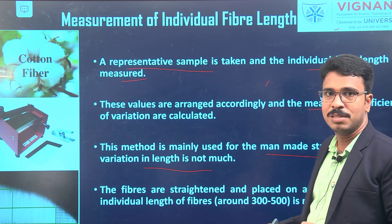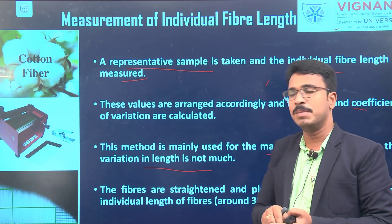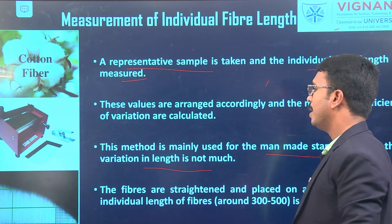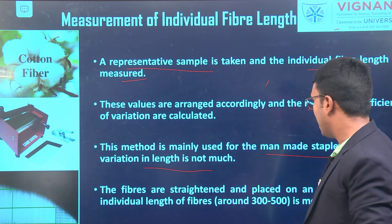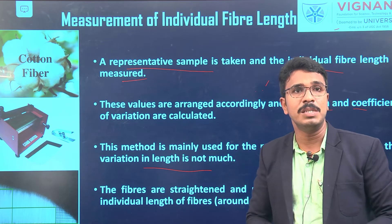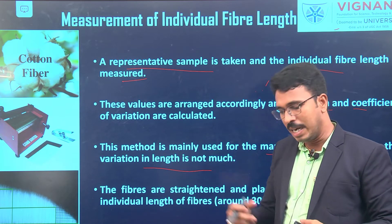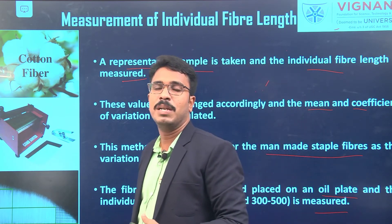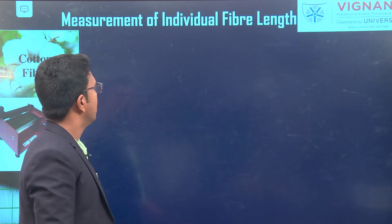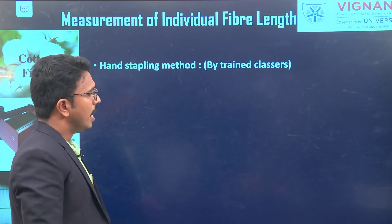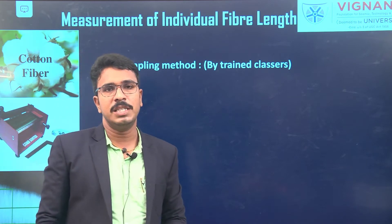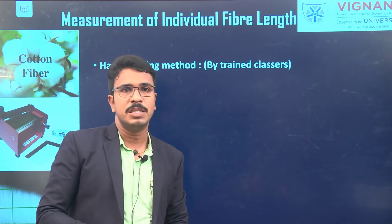After taking representative fibers, we straighten all fibers using a comb, place them on an oil plate, and measure individual fiber lengths. We place around 300 to 500 fibers and measure individual fiber length for each. After getting all values, we calculate the mean and coefficient of variation. This is the process of measuring individual fiber length, especially for manmade staple fibers.